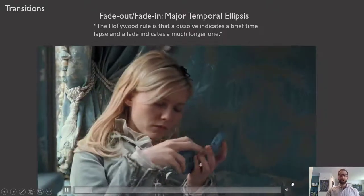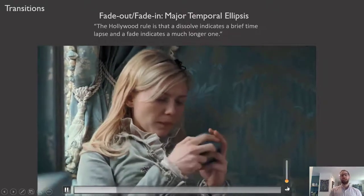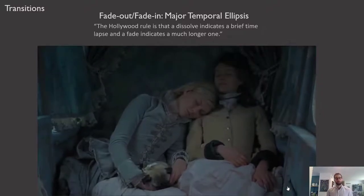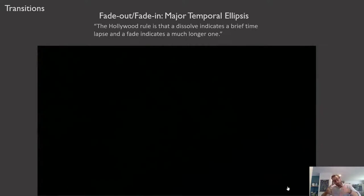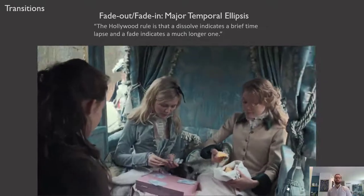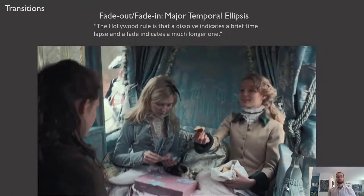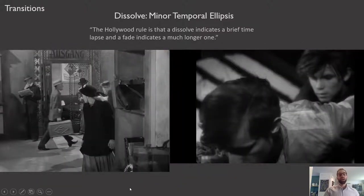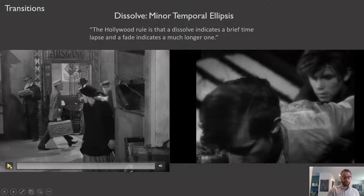That fade out actually took a longer time than the one in Rear Window, which helps us get the sense of a longer period of time being elided. After all, Marie Antoinette is taking a long trip via horse and carriage from Austria to France — she went to sleep and then woke up in the middle of playing cards. Moving on from fade out and fade in to dissolve, which is a more minor temporal ellipsis.